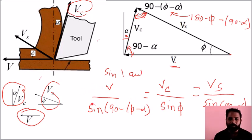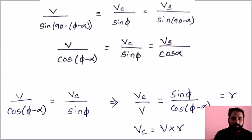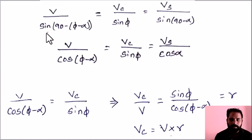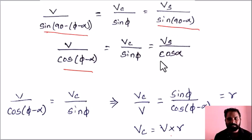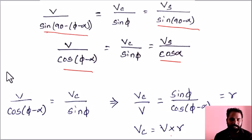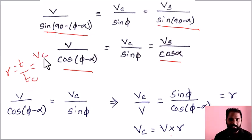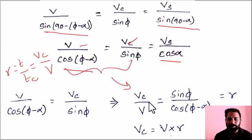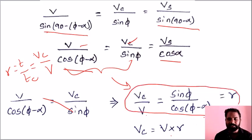Simplifying using the identity sin(90 minus theta) = cos theta: sin(90 minus phi minus alpha) becomes cos(phi minus alpha), and sin(90 minus alpha) becomes cos alpha. We also know the chip thickness ratio r equals t divided by tc, which equals Vc divided by V. Therefore, r equals sin phi divided by cos(phi minus alpha). This is the chip thickness ratio formula.